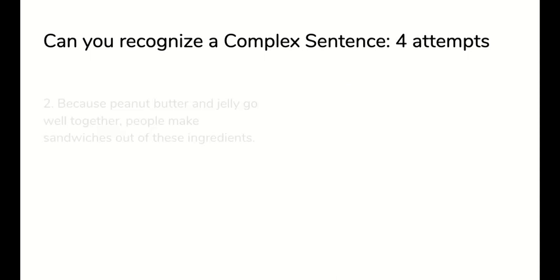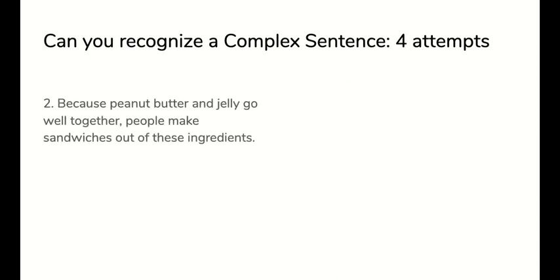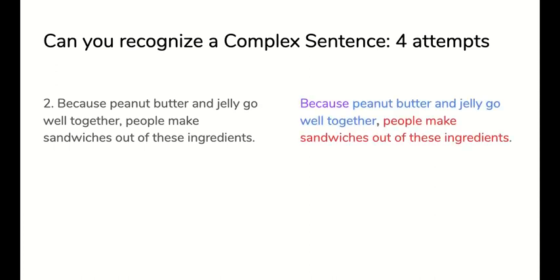Number two. Because peanut butter and jelly go well together, people make sandwiches out of these ingredients. That is a complex sentence. You can see it has all the parts and a comma perfectly well placed.